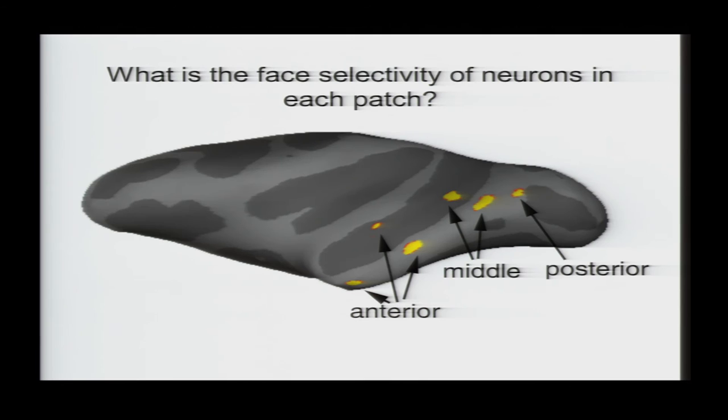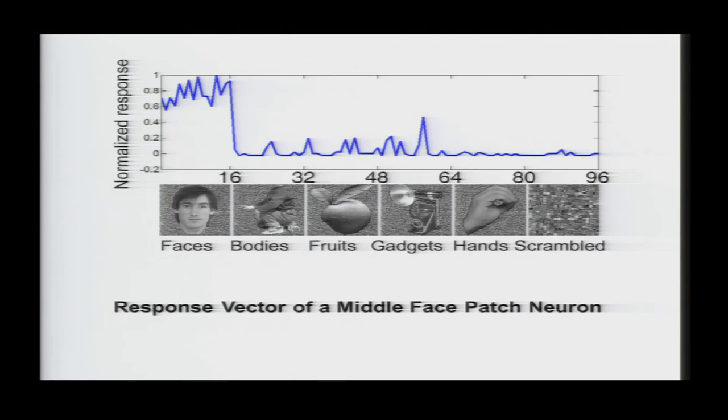So what is the selectivity of the neurons in these patches? To address this, we began in the middle face patch. And we showed the same images that we showed in the fMRI experiment, these six categories of images. So they're presented fully in random order. And I'd like to show you a movie of the responses of one cell from the middle face patch. So here, you'll see what the monkey saw, and you'll hear the clicks, which is action potentials.